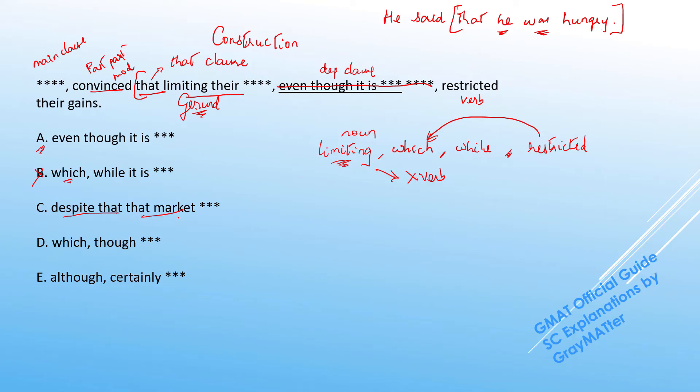Now let's look at C. C says despite that that market. Now reading this itself might sound awkward. This is invalid construction because it should have been despite the fact that that market. So we need despite the fact that. So simply saying despite that is going to be invalid. So C goes off by that.